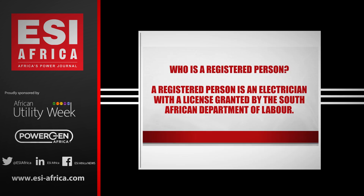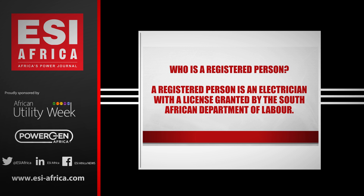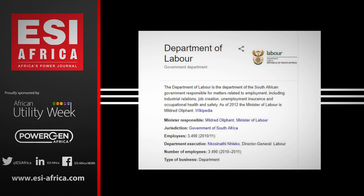In order to become a registered person, the Electrical Contracting Board of South Africa advises that once the electrician has received his activated wireman's license from the Department of Labor, the electrician will be given a registration number by the department, which allows a contractor to purchase certificates of compliance.